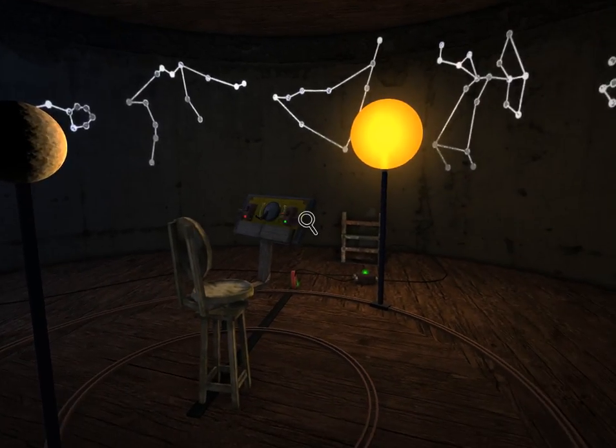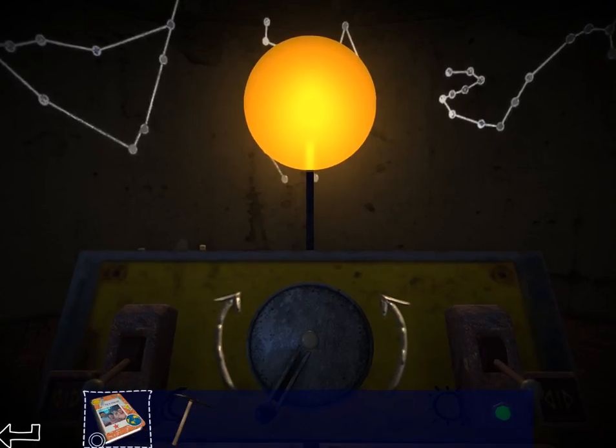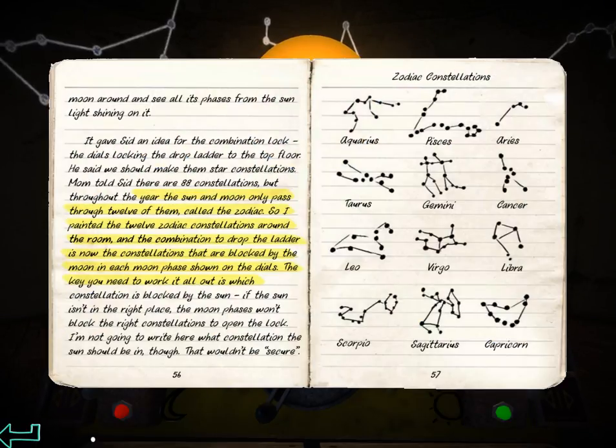I don't want to stop this video here, but I also don't want to have bad failure. So I'm gonna end the video here. I'll reread these notes, see if I can figure out what exactly it is I'm missing here. It's because it's saying, if the sun isn't in the right place, the moon phases won't block the right constellations.